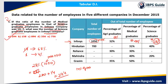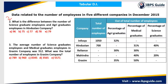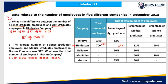Question 2: What is the difference between the number of science graduate employees and agriculture graduate employees in Hindustan company? In Hindustan, the total is 100%. Medical is 31% and science is 40%, so those two total 71%, leaving agriculture at 29%. The difference between science (40%) and agriculture (29%) is 11%. So 11% of 700 = 77. The answer is Option C.